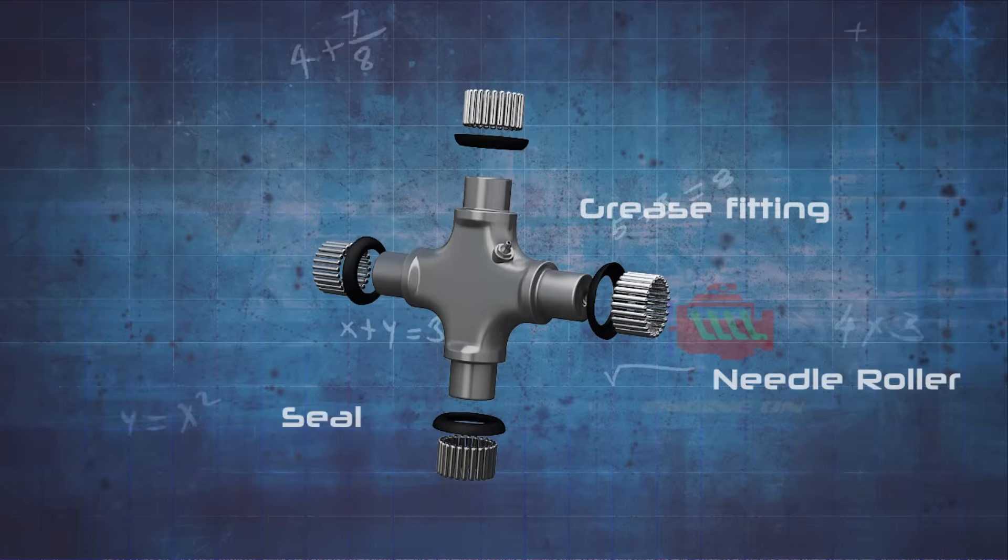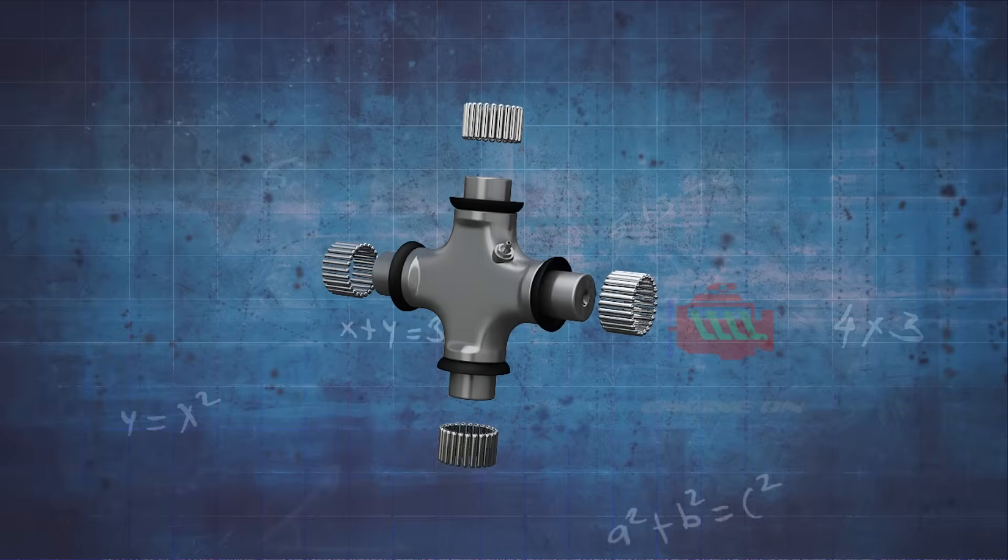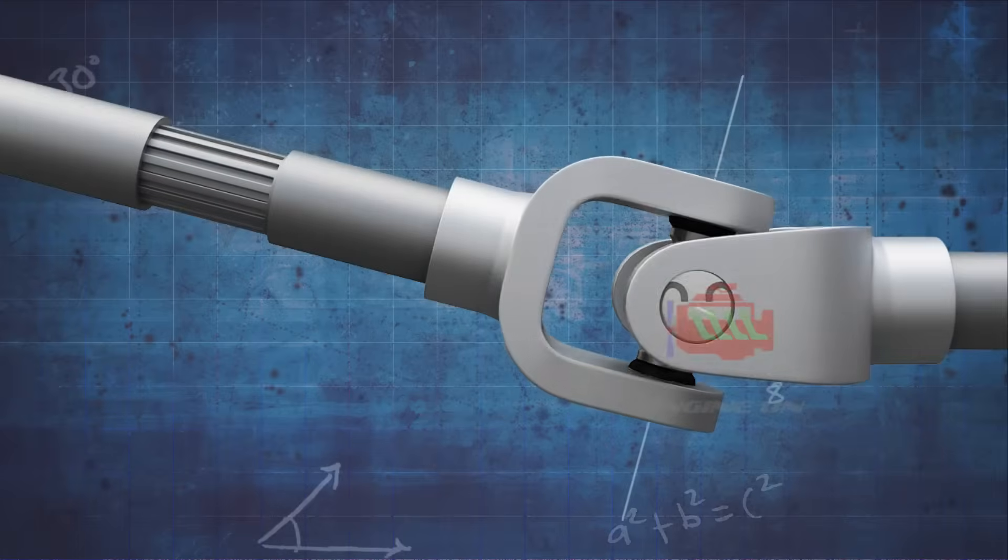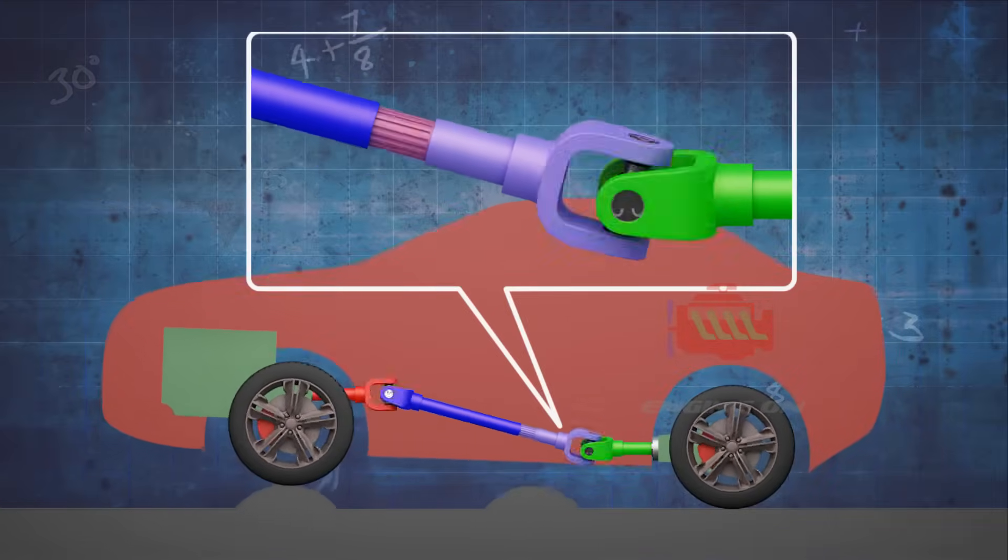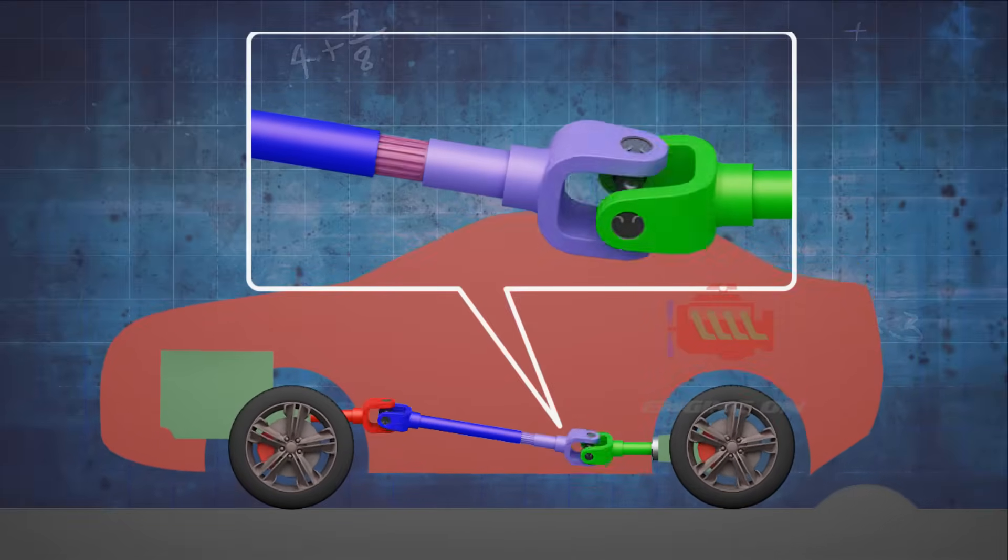A differential is a gear train with three shafts that has the property that the rotational speed of one shaft is the average of the speeds of the others, commonly found in automotive applications like the drive shaft, connecting the transmission to the differential where the wheels can move up and down due to suspension movement.